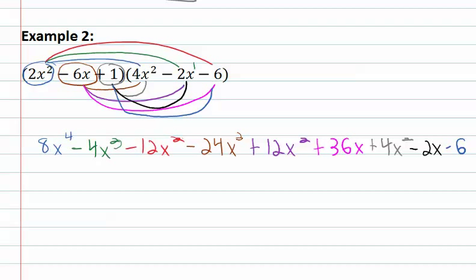Lots and lots of terms. Just because this problem becomes really big though doesn't make it difficult. It's the same pattern repeated over and over again. Take the first term, distribute it through the next polynomial. Take the next term, distribute it through the next polynomial, and keep repeating until we're done.